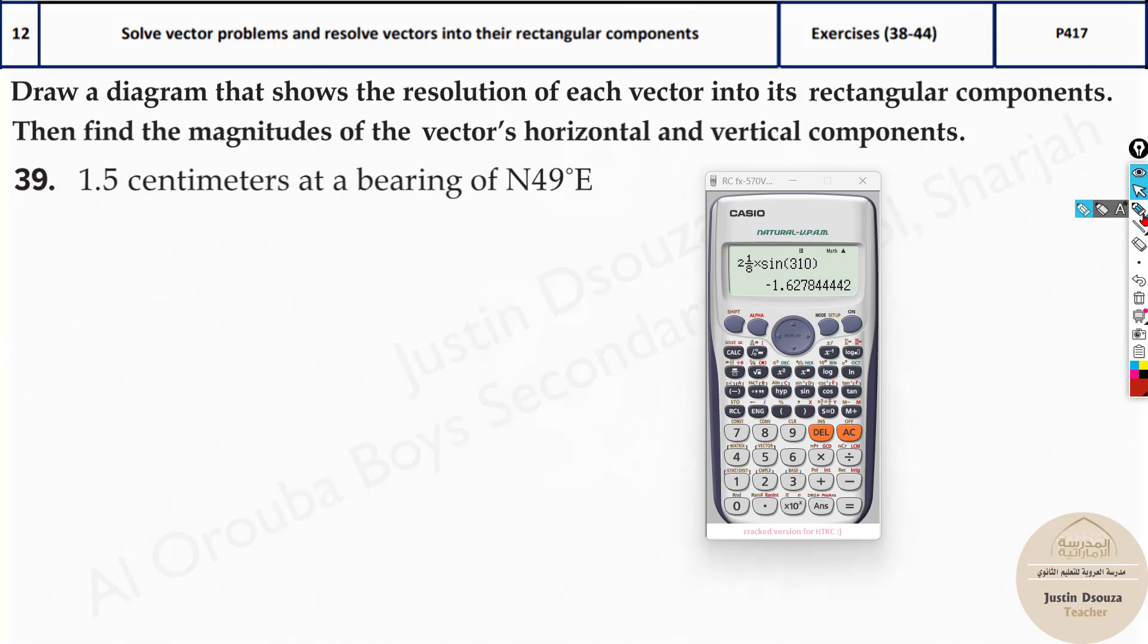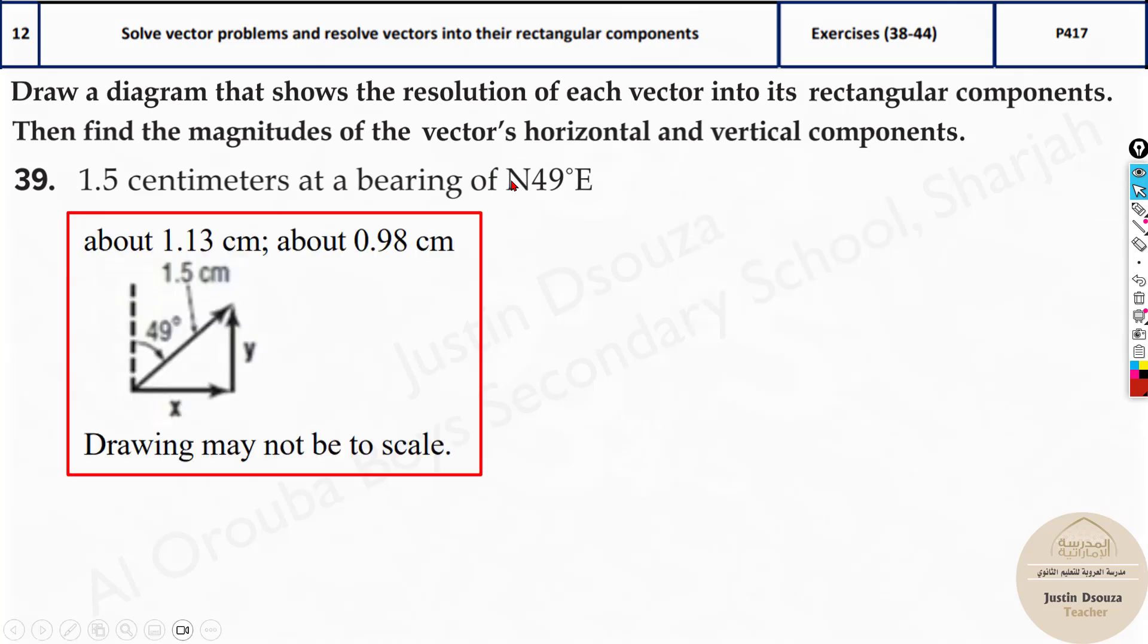You can try this by yourselves. Only important thing over here is this north 49 degrees east. What does that mean? We should know how to draw north, south, east and west. North is always the upper direction, south is down, east is to the right and west is to the left. Now when they tell you north 49 degrees east, n stands for north and e stands for east. So you need to start from the north and draw 49 degrees from here towards the east. That is somewhere in the middle. That is how we draw it.